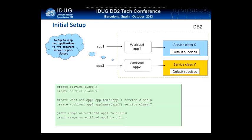This provides CPU resource isolation between the applications — something you might want to do if you're consolidating multiple applications onto a single database system or deploying a multi-tenancy type application. In order to get this going, we're going to set up a couple of service classes. I've got on this page some DDL for you to do this. We're creating two service classes, X and Y, and then two workloads which will map each of your applications based on application name to their corresponding service classes. Finally, we grant usage on the workloads so that they will be active and map your applications correctly.